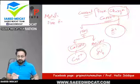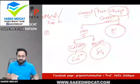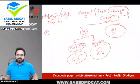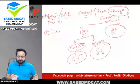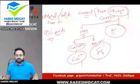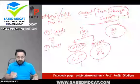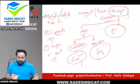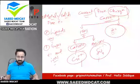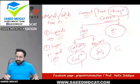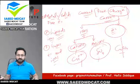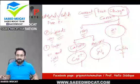Toh phir kis mein kis wajah se current hota hai? Metals mein — free electrons ki wajah se. Dusri baat: metals ya solids mein ions move nahi karte. Liquids — jaise copper sulfate ki baat kar rahe hain — is mein kya hote hain? Ions. Copper sulfate toot ta hai to copper alag aur sulfate alag banta hai — ions ki wajah se current karta hai liquids mein. Jabke gases mein ions bhi hote hain aur free electrons bhi move karte hain — aur isi ko plasma kehte hain.